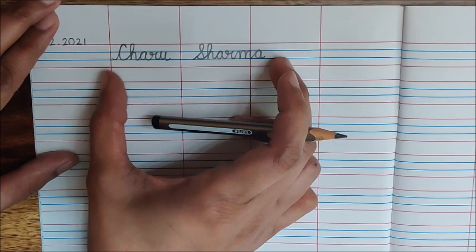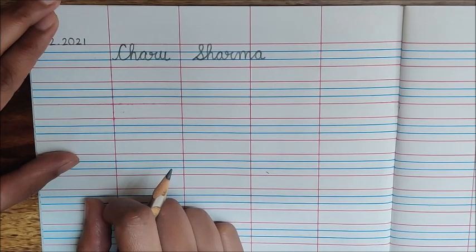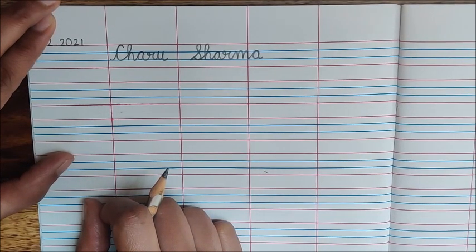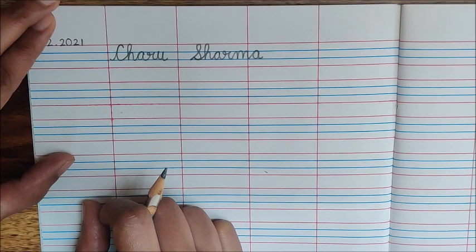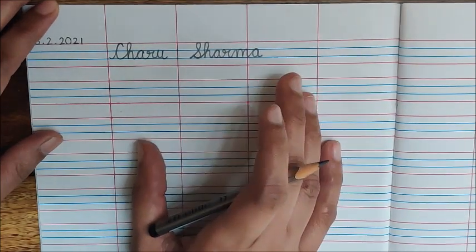Ab apna naam likhoge hiyaan par. And then what do we have to do children? We are going to practice writing of A to Z once again. Because we have its test on Tuesday. That is tomorrow, February 9. So let us start writing A to Z.